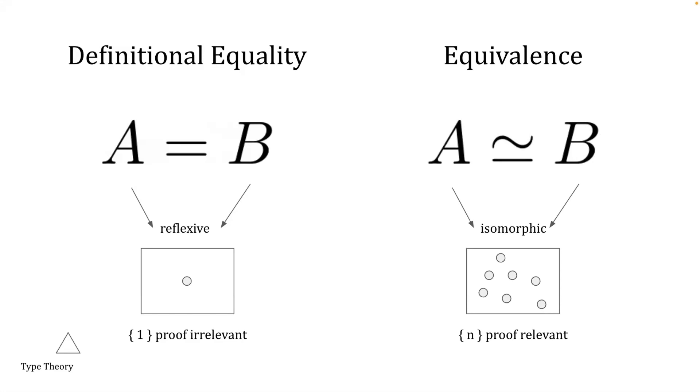There is a weaker notion of definitional equality, and that is equivalence, also known as an isomorphism or a bijection. Loosely, it says, if A and B are isomorphic, you can transform one to another and back without losing any information. And there can be more than one transformation from A to B, and vice versa. Thus, this is a proof-relevant notion of equality in contrast to Lean's propositions.